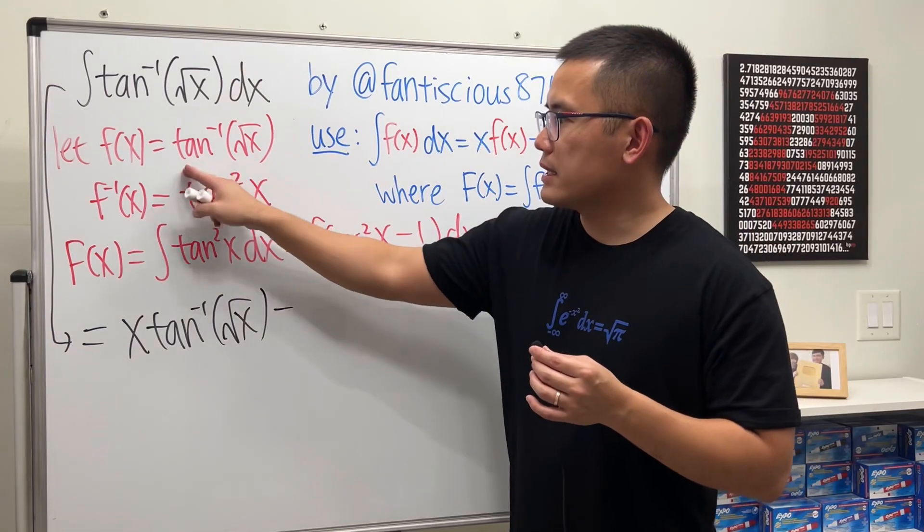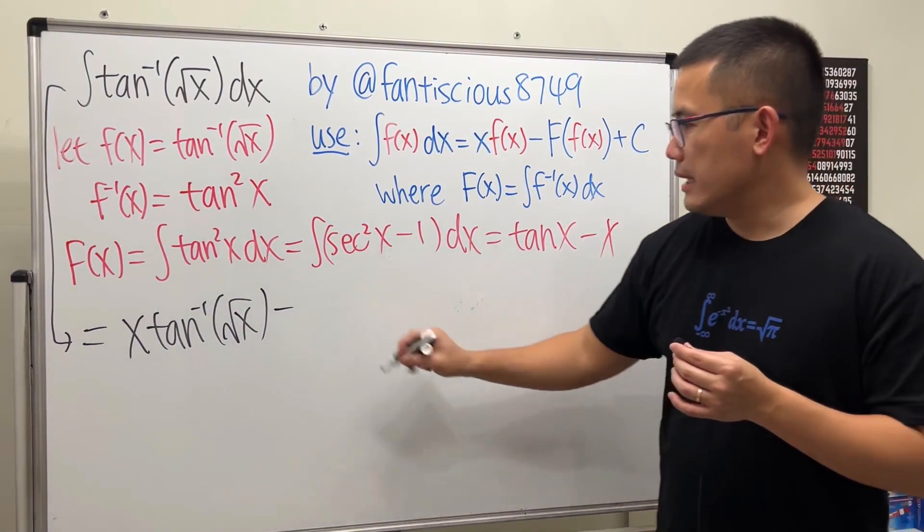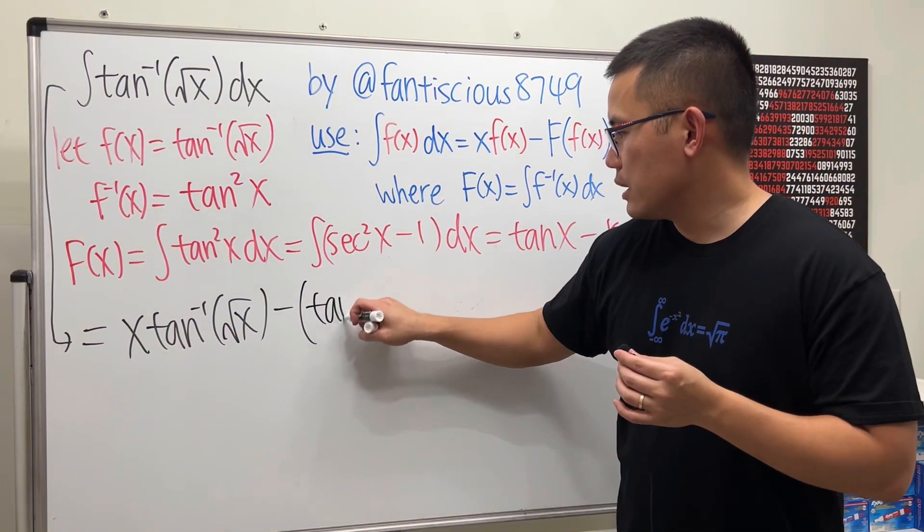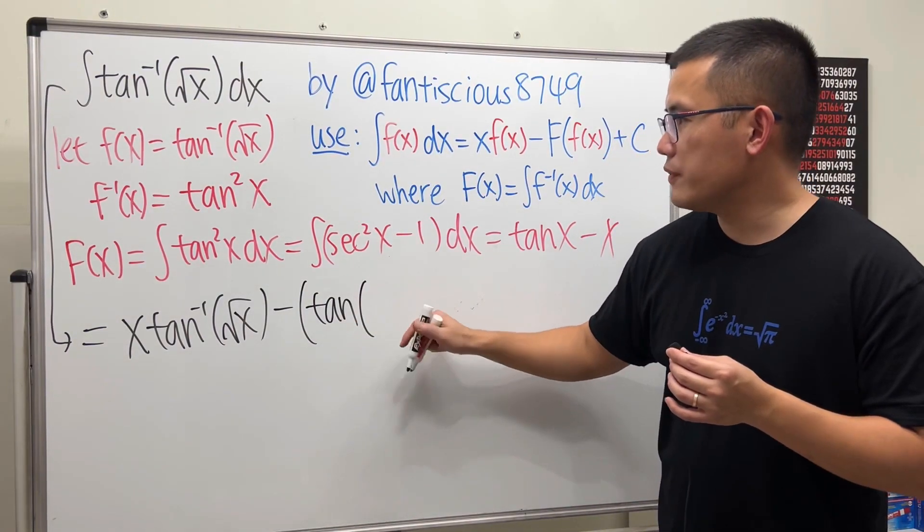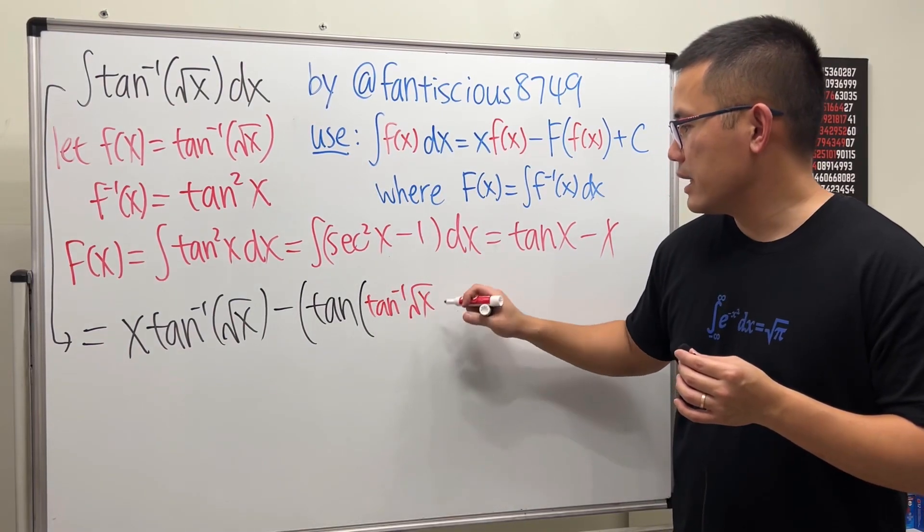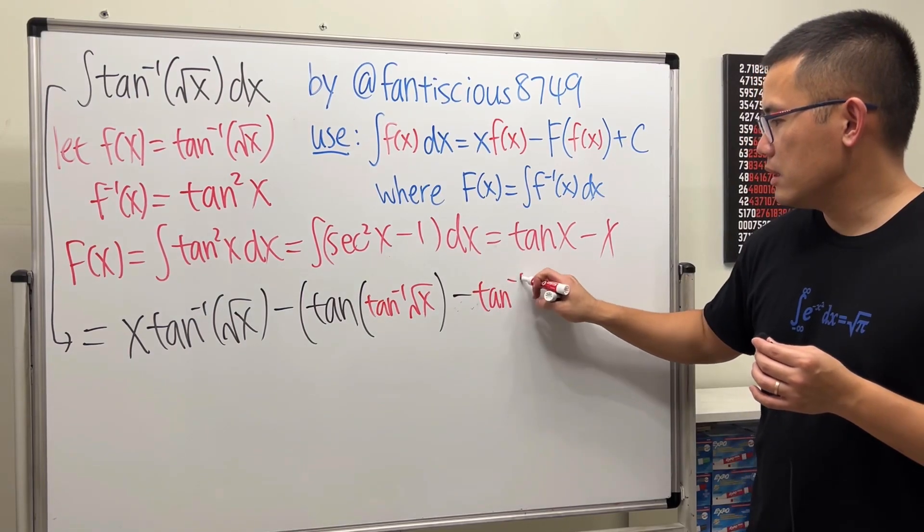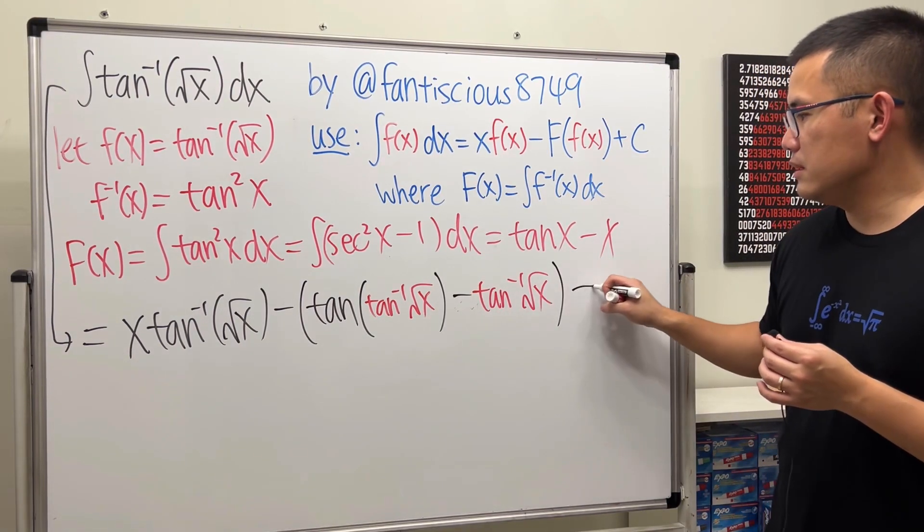So I have to put little f of x into capital F of x, which is here and here. And it's a minus, so I'll just put parentheses tangent of the little f of x, which is this. And then minus inverse tangent of square root of x. And then plus C.